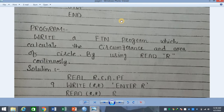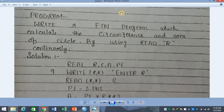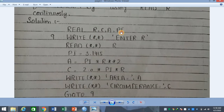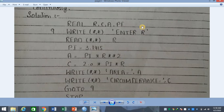We have to look at the next statement: write a Fortran program which calculates the circumference and area of a circle by reading R continuously. The word 'continuously' is key — once the program runs, the compiler will keep demanding a new value for R, and calculate new area and circumference each time. In the solution, we declare R to be REAL, and circumference, area, and PI are all declared REAL because they can have decimal point values.